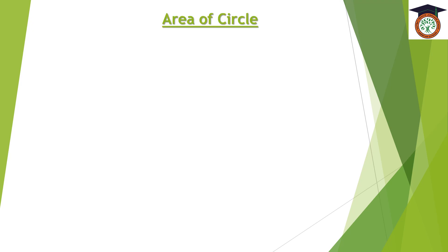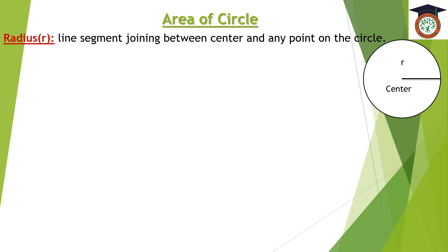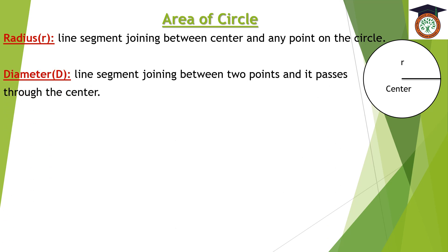Good morning. Today we are going to talk about the area of a circle. This is the circle. We should know some important definitions about the circle. The first one is the radius. The radius is a line segment joining between the center of the circle and any point on the circle.